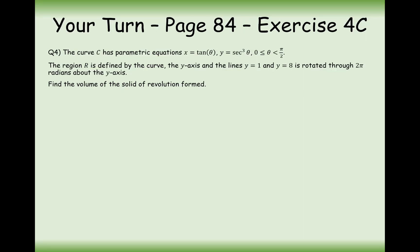Now it's your turn: try page 84, exercise 4C, question 4. Note that you are rotating through 2π radians about the y-axis. The curve C has parametric equations x = tan θ, y = sec³ θ, with θ between 0 and π/2. The region R is bounded by the curve, the y-axis, y = 1, and y = 8. Find the volume of the solid of revolution.